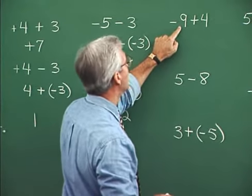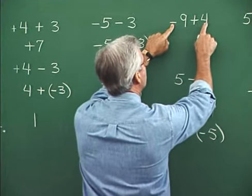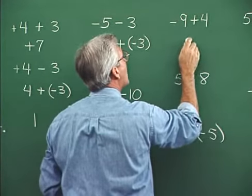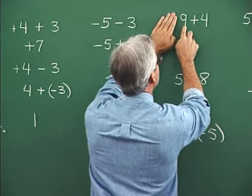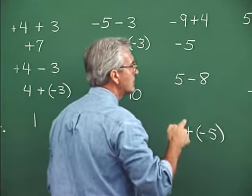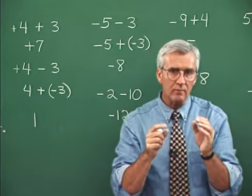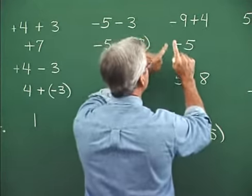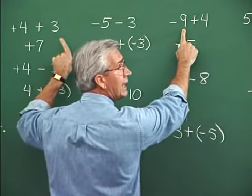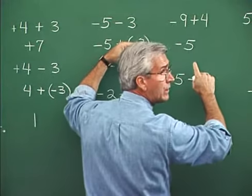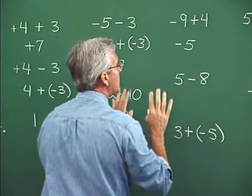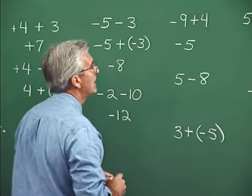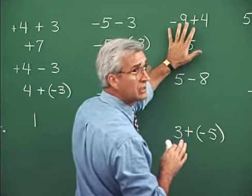Negative nine plus four: the signs are different, so take the small digit from the large digit — disassociate from the signs and take four from nine to get five. Attach the sign associated with the larger digit — the sign in front of the nine is negative, so it's negative five. All of these collection problems can also be seen on a number line: start at zero, go left to negative nine, then go four units in the positive direction, and you end up at negative five. But the number line is a cumbersome way to do this day to day.